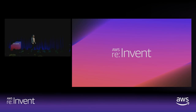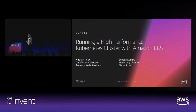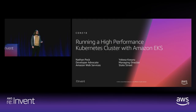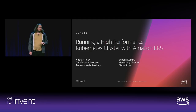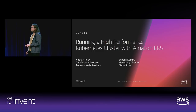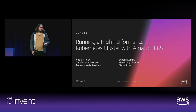Hello, everyone. My name is Nathan Peck. I'm a developer advocate at AWS, and today I'm going to be presenting a session on running high-performance database clusters with Kubernetes and Amazon EKS. I'm going to be joined by Yakesa from State Street, who's going to show you an amazing demo of running an extremely high-performance Kubernetes cluster using the open-source database Vitesse. You're going to be amazed by how many transactions per second this open-source database is able to achieve within Kubernetes.